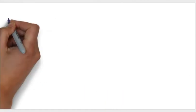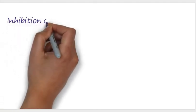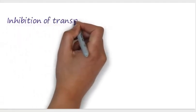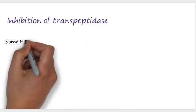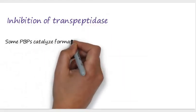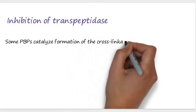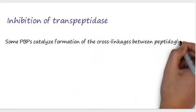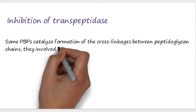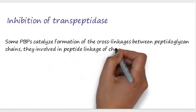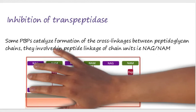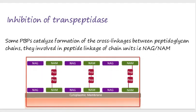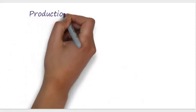The second mechanism is inhibition of transpeptidase. Some penicillin binding proteins catalyze the formation of cross-linkages between the peptidoglycan chains, involving peptide linkages of chain units — that is, N-acetylmuramic acid (NAM) and N-acetylglucosamine. You can pause the video to see NAM and N-acetylglucosamine. Penicillin inhibits these proteins.